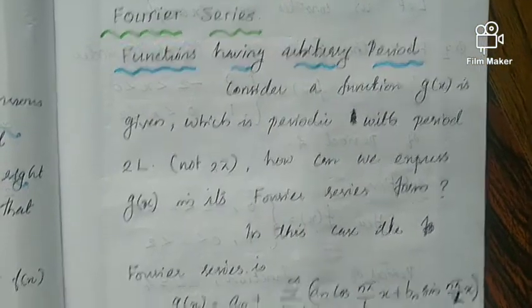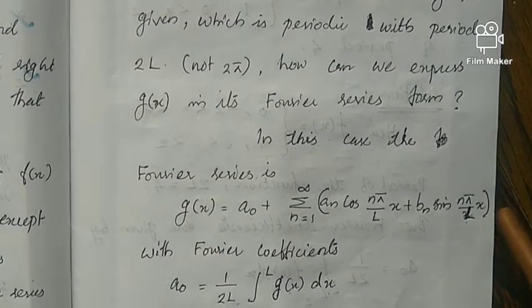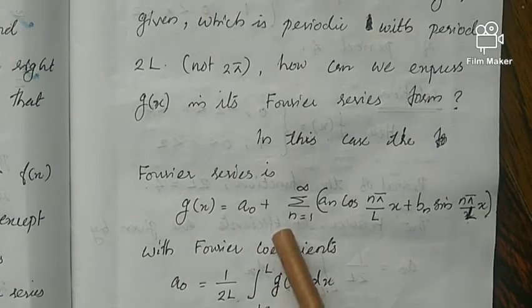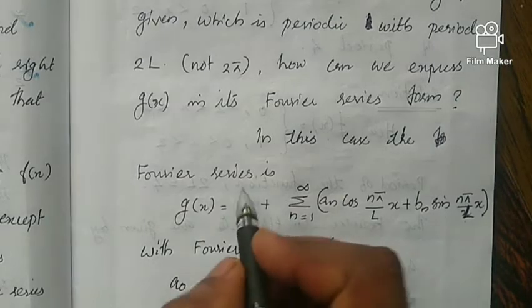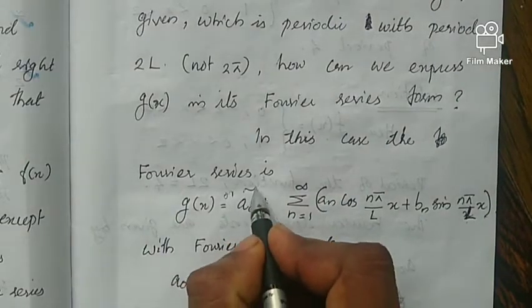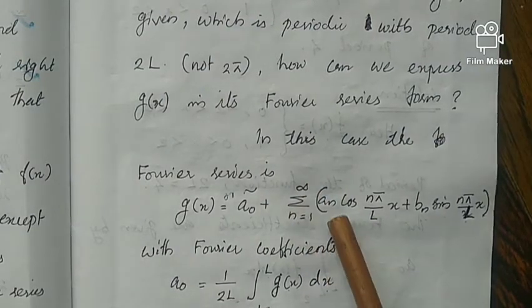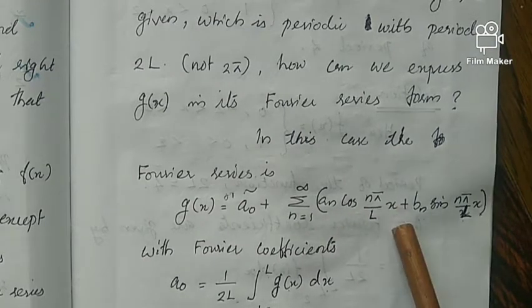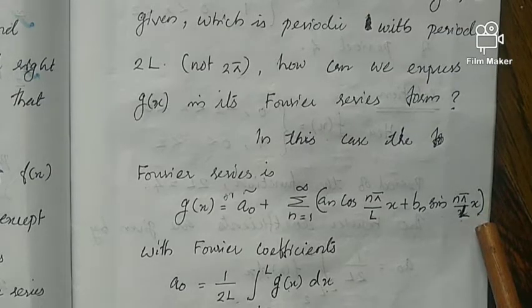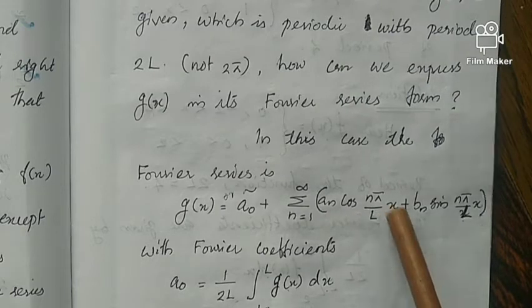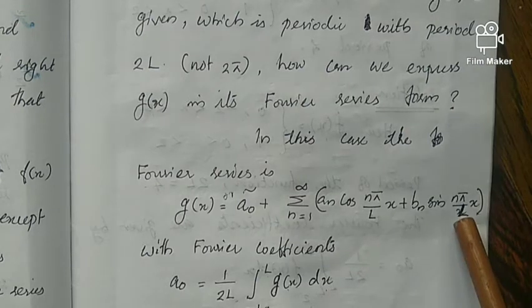...we can find it as g(x) equals, or is approximately equal to, a_0 plus sigma n equals 1 to infinity [a_n cos(nπ/L × x) plus b_n sin(nπ/L × x)]. Note that in the usual case we write a_n cos(nx), but here we have nπ/L times x. Here also π/L times x.